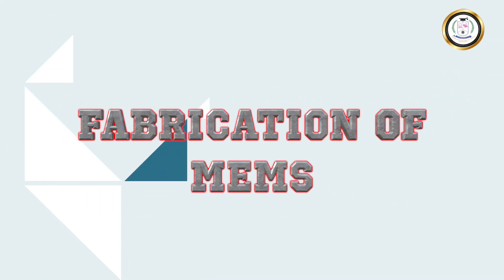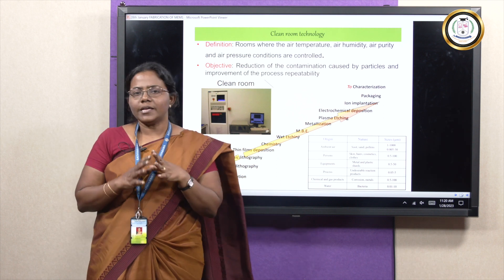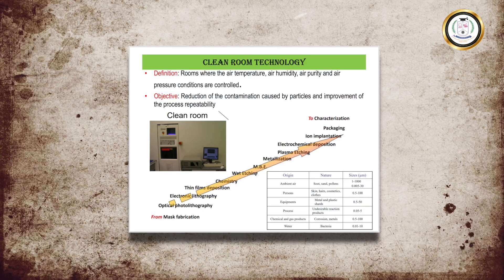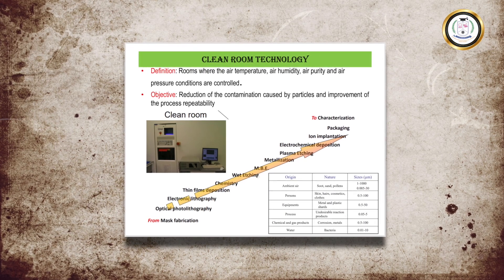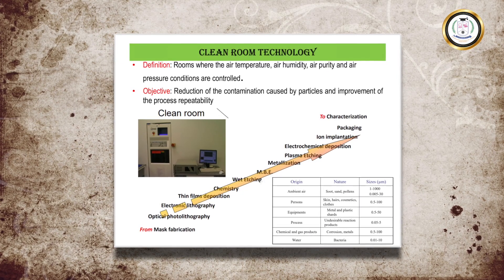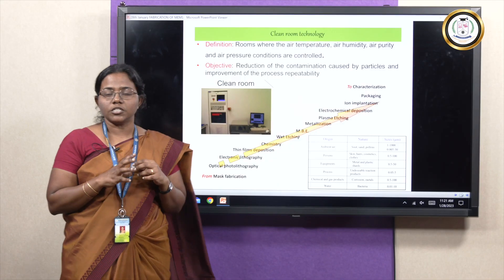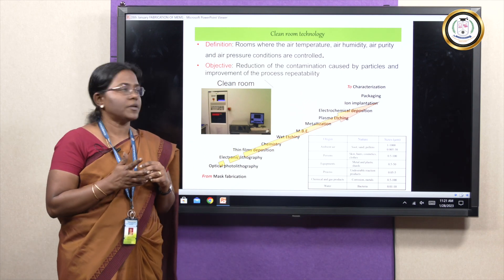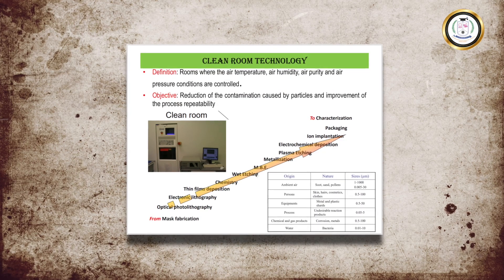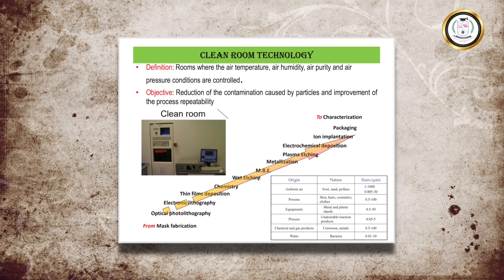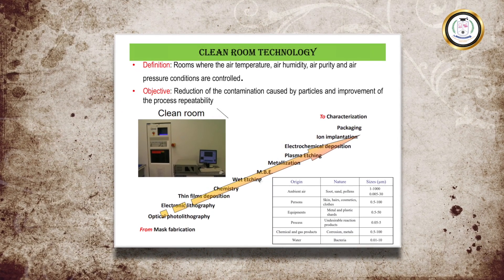Now we will discuss the fabrication of microelectromechanical systems. All electronic components are fabricated in a clean environment where temperature, air humidity, and air purity are maintained at particular levels. The main objective of this is to reduce contamination while fabricating microcomponents.